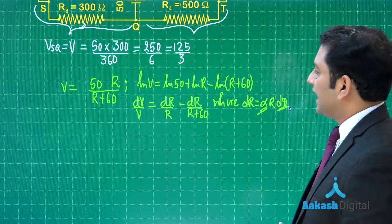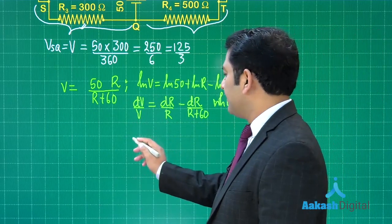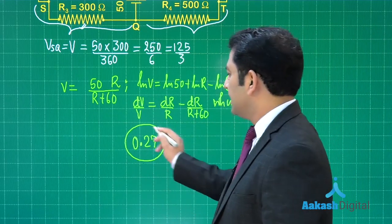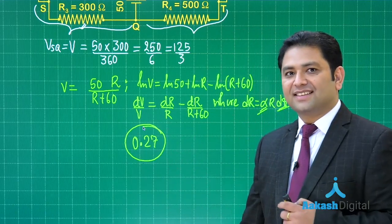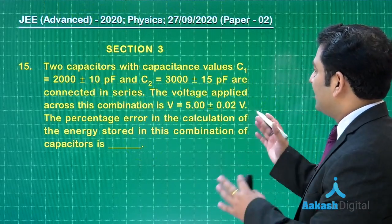All you need to do is calculate the value of dV. Even V original is there, and that value will come out to be 0.27. That is the correct integer for this question. Let us go to the next.